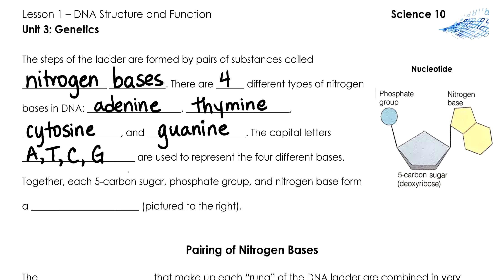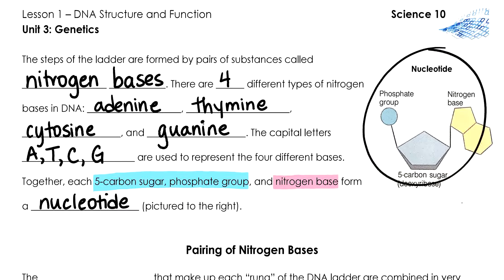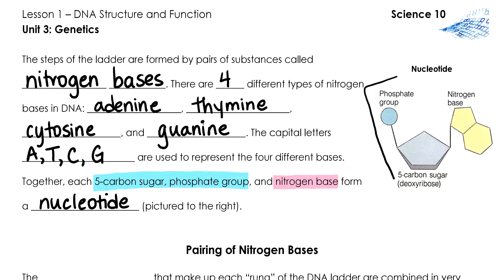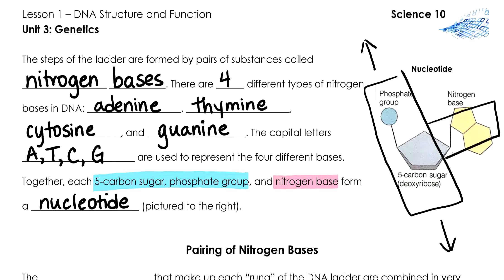Together, the sides of the ladder — the five-carbon sugar and the phosphate group — combined with the rung of the ladder, the nitrogen base, form what's called a nucleotide. Here's a diagram of a nucleotide. The phosphate group and the sugar form the side of the ladder, and the nitrogen base forms a rung.